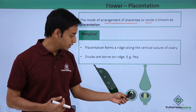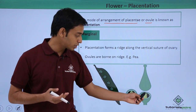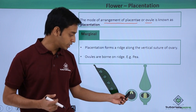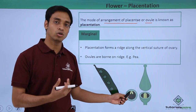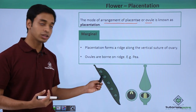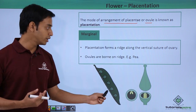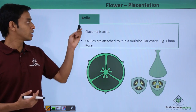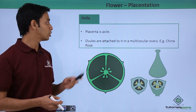There are different views of the picture represented here — a cross-sectional view from the top and a cross-sectional view from the side. You can see the placenta is present at one side of the ovary and all the ovules are born on this ridge.